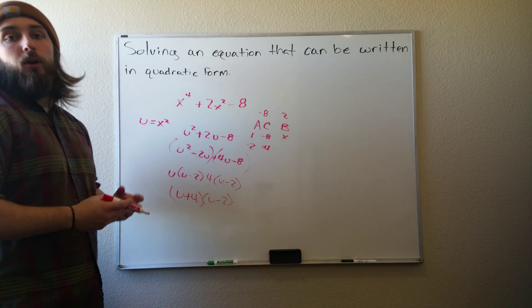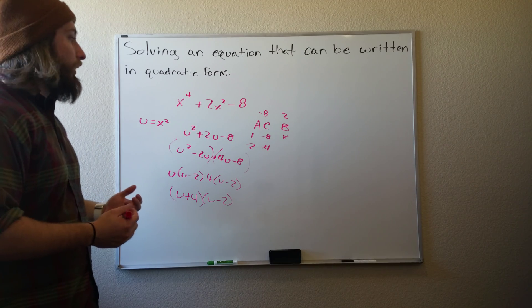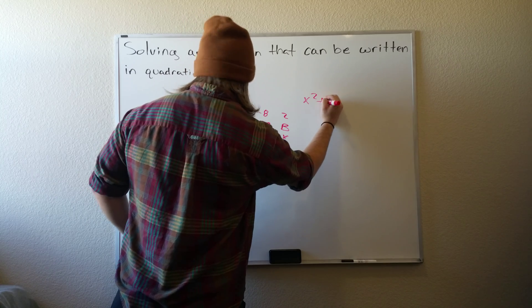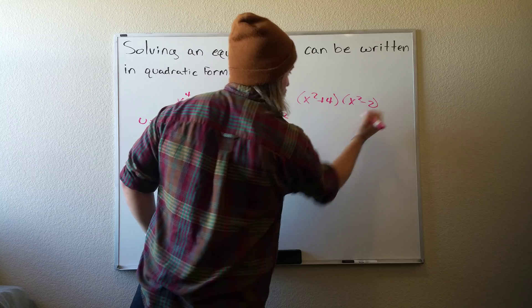Now we're almost done but we need to substitute the u back in since we substituted the x squared out. So we get x squared plus 4 times x squared minus 2.